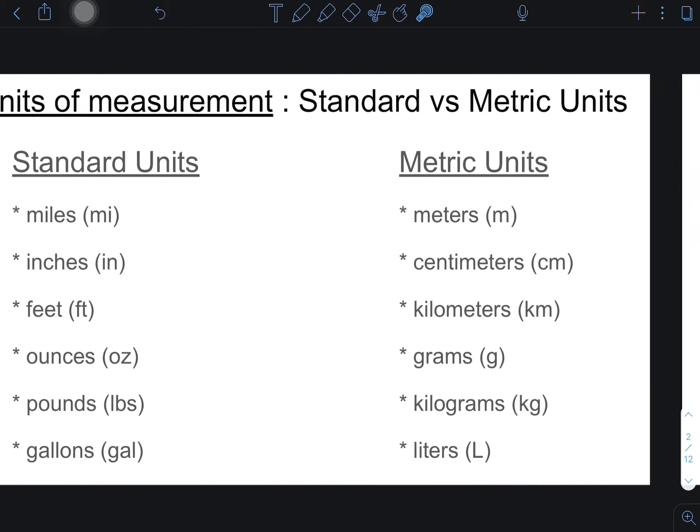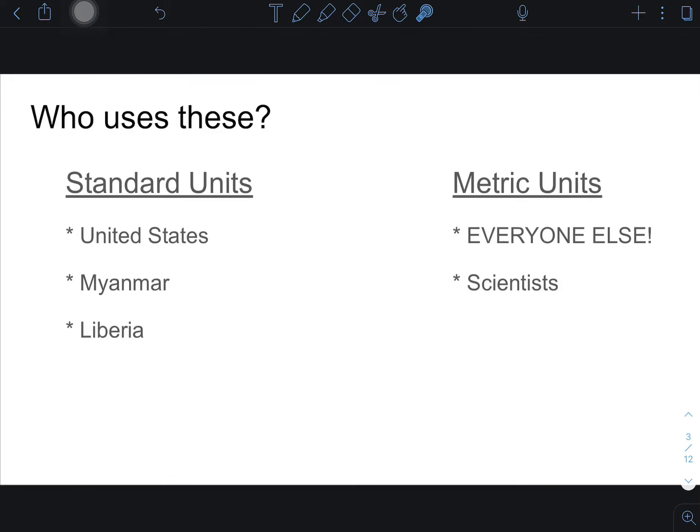The main units that we often see. So who uses the standard or imperial? We do, United States. And if you notice, the list of other countries is really small. There's three countries in the world that use the standard units of measurement. So who uses the metric? Everyone else, including scientists in the United States.